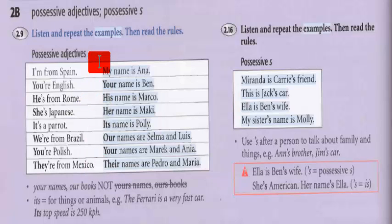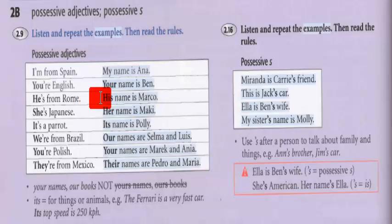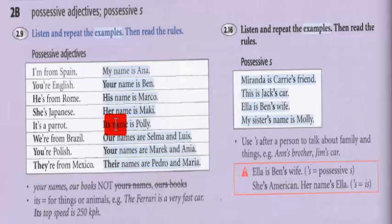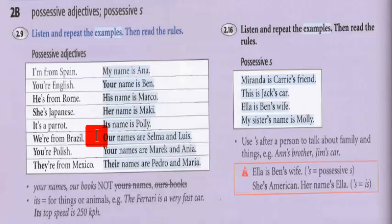Vejam que os possessive adjectives falam de posse, né? My — meu, my name. Your — seu. His — que é dele. Her — é dela. It — lembra que o it é ele ou ela para coisas e animais, sem o apóstrofe S. Importante lembrar isso. O our — que é nosso. We — que é seu ou seus. E their — que é deles. Ótimo, então eu fiz a translation aí dos possessive adjectives.